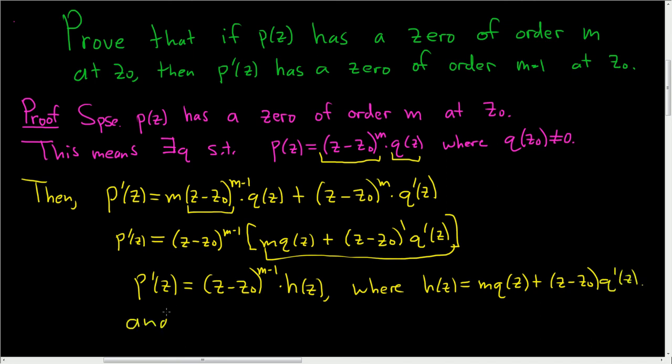And moreover if we look at h of z naught, well let's see, h of z naught this piece here is going to be 0. So we're just going to have m times q of z naught. And there's no way this is equal to 0 because m is not 0 and q of z naught is not 0 by hypothesis.